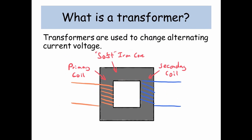Well, transformers are used to change alternating current voltage. They consist of a primary coil, a soft iron core, and a secondary coil.